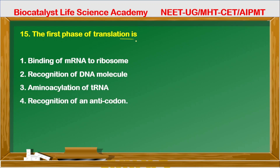Question 15: The first phase of translation — that is, of protein synthesis — is? Binding of mRNA to ribosome is not correct. Recognition of DNA molecule is not relevant in translation. Amino acylation of tRNA — the amino acid is added to the tRNA molecule by amino acylation. Recognition of anti-codon comes after this step. So the first phase is amino acylation of tRNA — option third.